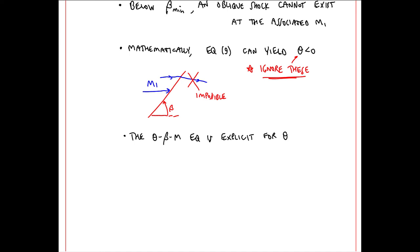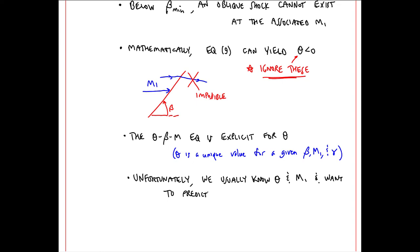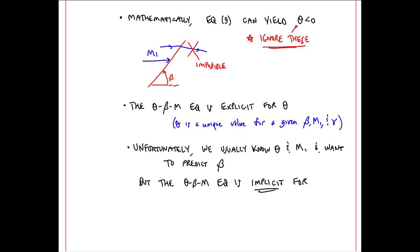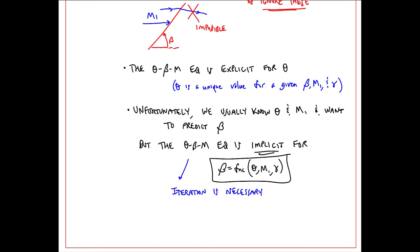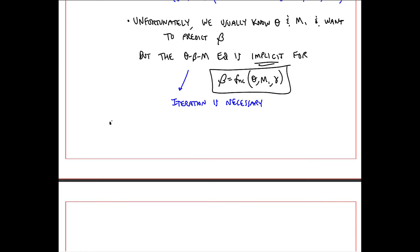The theta beta M equation is explicit for theta. Theta is unique for a given beta, M1, and gamma. Unfortunately, we usually know theta and M1 and want to predict beta. But the theta beta M equation is implicit when you want to find beta as a function of theta, M1, and gamma. So either iteration or some sophisticated software is necessary to solve for beta.